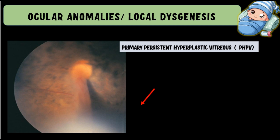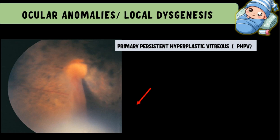PHPV is also referred to as persistent fetal vasculature. There is basically a failure of the structures within the primary vitreous to regress with time. Normally the primary vitreous — which contains blood vessels — gets replaced by the secondary vitreous, which is clear. In PHPV, there is failure of these structures to regress, and you will see a fibrovascular stalk — containing both fibrous tissue and a vascular component — growing from the optic disc all the way to the posterior lens capsule, as seen in the picture.